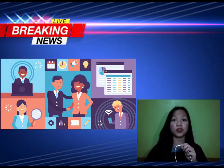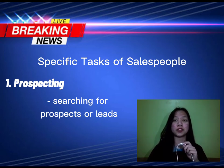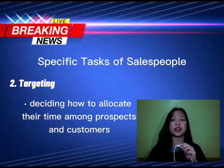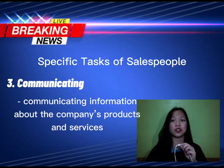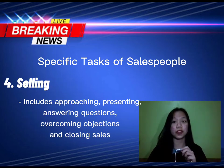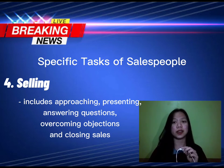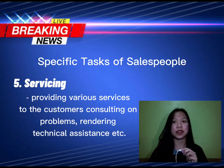Forming their job, salespeople complete one or more specific tasks. First is prospecting, which is the searching for prospects or leads. Next is targeting — deciding how to allocate their time among prospects and customers. Third is communicating, which is about communicating information about the company's products and services. Fourth is selling, which is approaching, presenting, answering questions, overcoming objections, and closing sales. Next is servicing, which is providing various services to the customers.